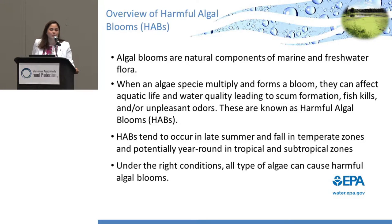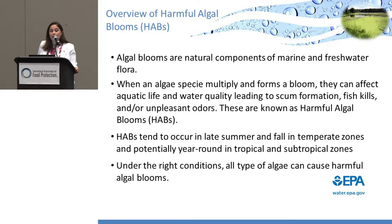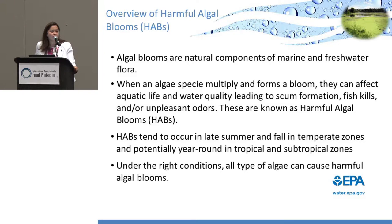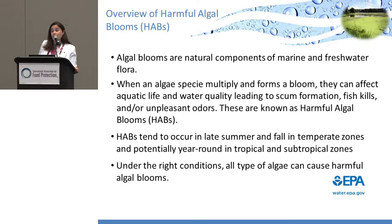When we have harmful algal blooms, some also produce toxins — not all of them produce toxins. So by looking at a bloom in a water system, you don't know if it's toxic or not. They tend to occur in late summer and fall in temperate zones, and also year-round in tropical areas. Under the right conditions, all types of algae can cause harmful algal blooms.